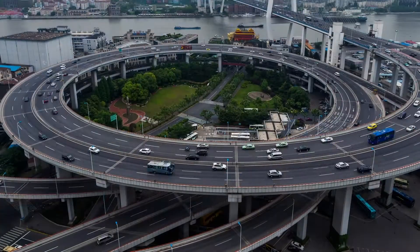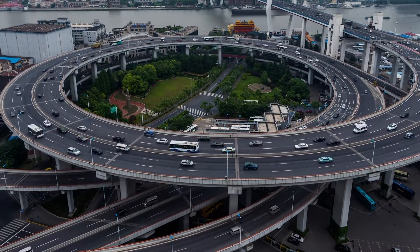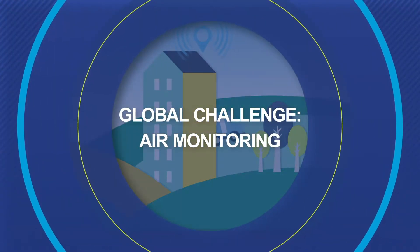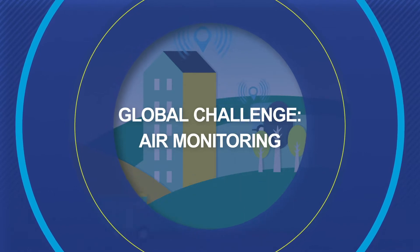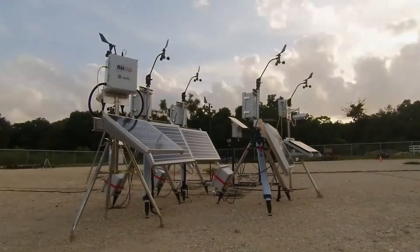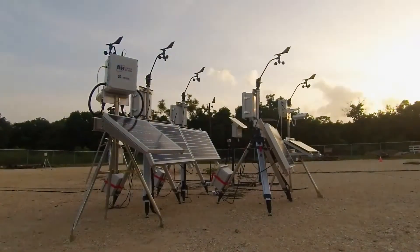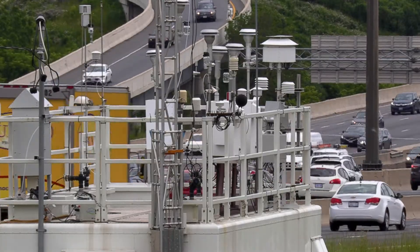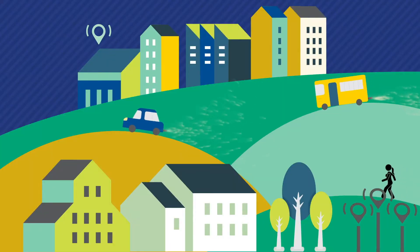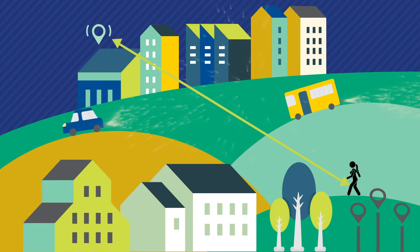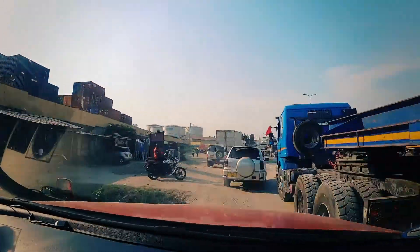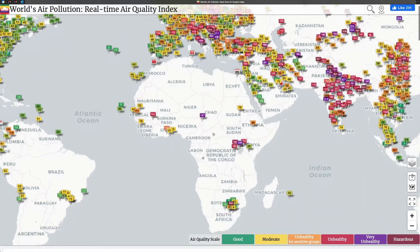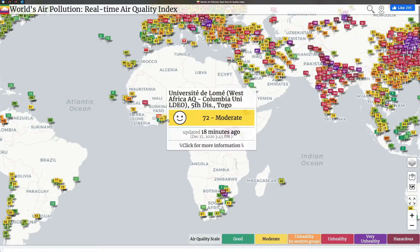Air pollution is hard to see, and that's why it's often hard to pinpoint sources and trends to develop effective solutions. Regional pollution monitors are the norm in developed countries to help measure whether the air is healthy to breathe. These stationary monitors are often expensive and provide important information about the overall quality of air across a large area. In contrast, in developing countries, there may be few or even zero monitors to measure air quality, limiting a community's knowledge of health risks for the population.